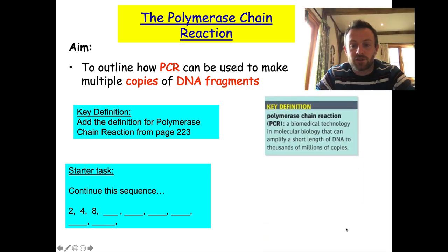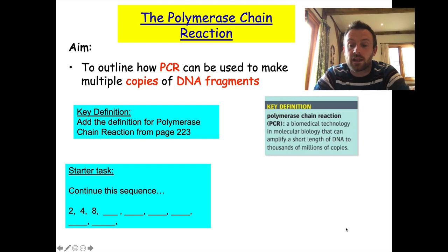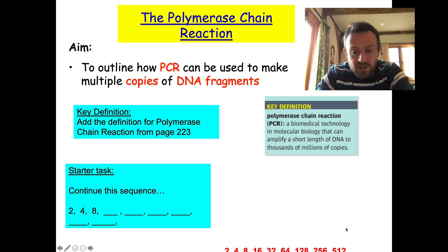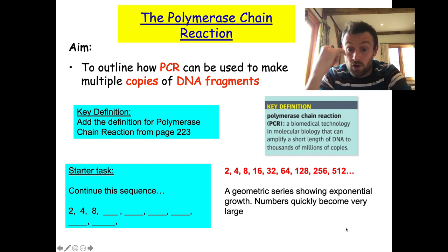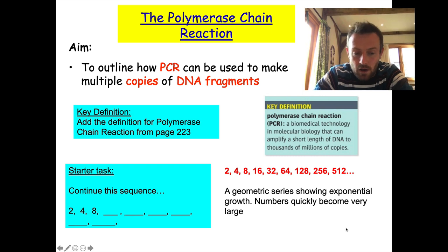The definition: polymerase chain reaction is a biomedical technology in molecular biology that can amplify a short length of DNA to thousands, millions, or billions of copies. The sequence continues as a geometric series, showing exponential growth — something we should be quite familiar with — and the numbers quickly become very large.